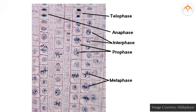Anaphase: in this phase, centromeres split and sister chromatids separate from each other. Spindle fibers begin to contract and pull the sister chromatids to opposite poles of the cell.